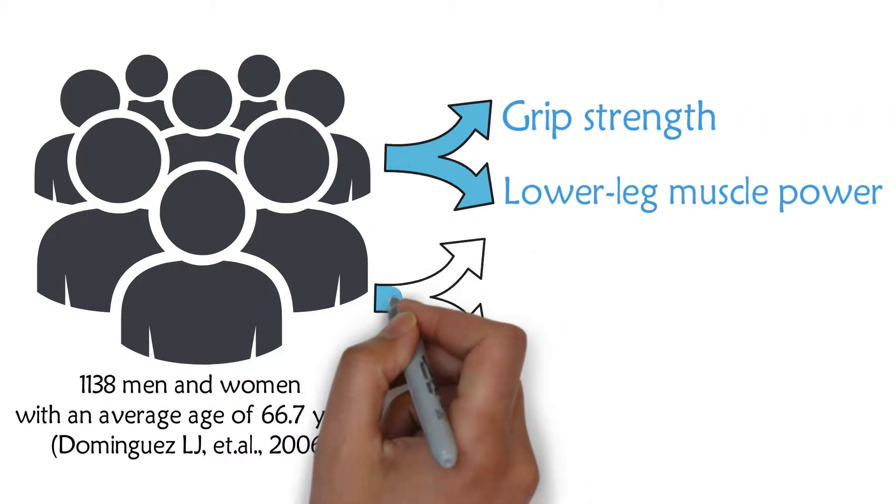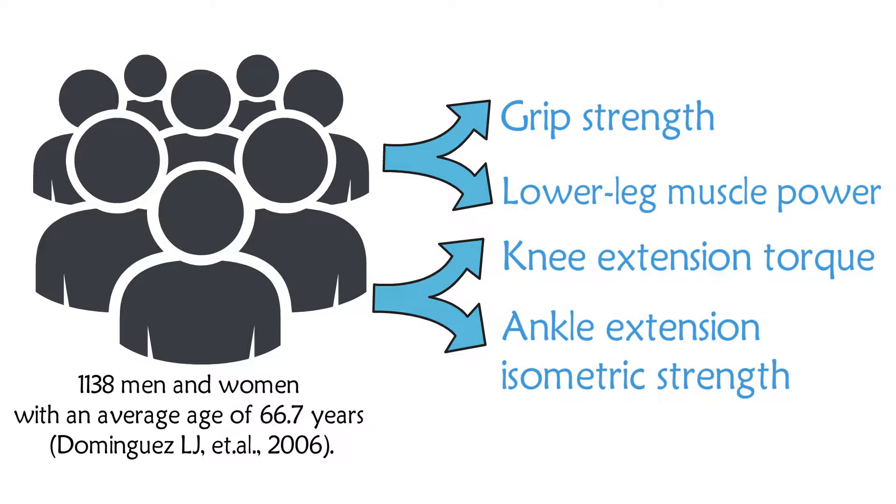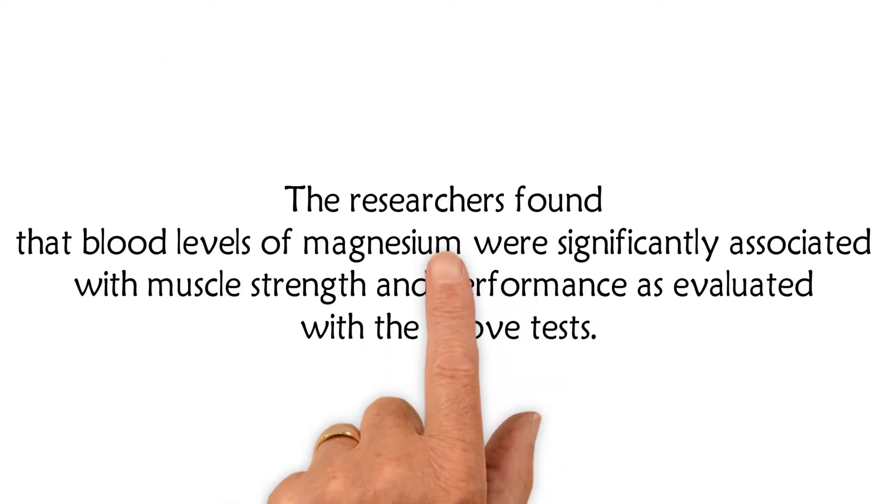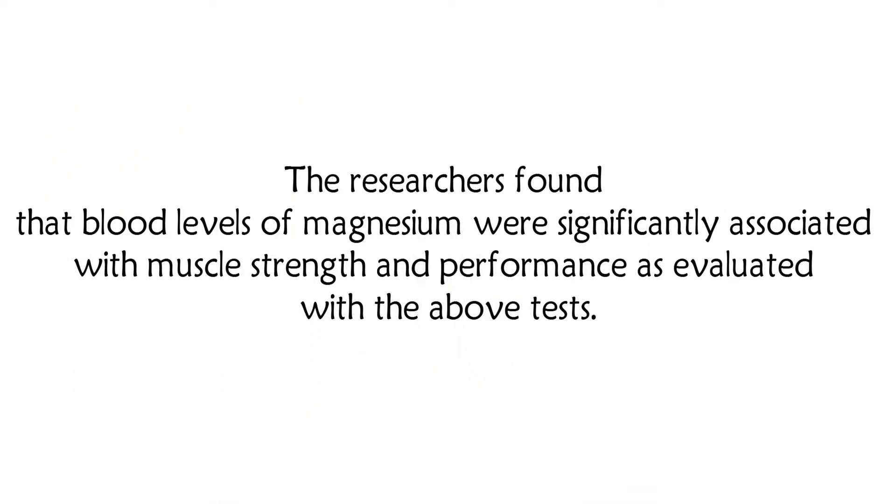lower leg muscle power, knee extension torque, and ankle extension isometric strength. The researchers found that blood levels of magnesium were significantly associated with muscle strength and performance as evaluated with the above tests.